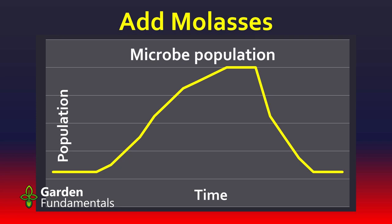Then they reach a plateau where the food runs out. Some start dying off, but those dying off are adding organic matter and feeding the ones that didn't die. Eventually the population goes back down to the level it was before, because the number of microbes in your soil is dependent on the food — and this excess of molasses has just run out. The party's over. So yes, molasses increases the microbial population over a very short period of time, but really doesn't do anything for your garden long term.